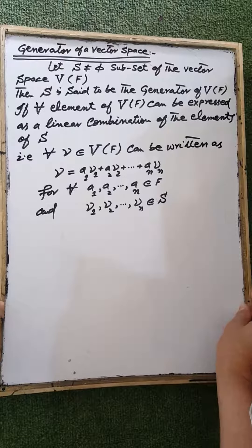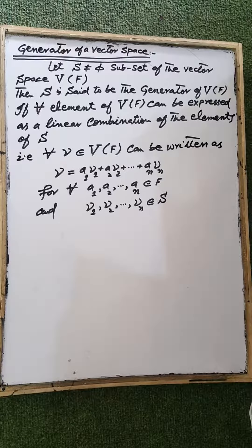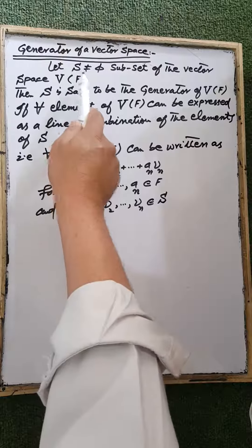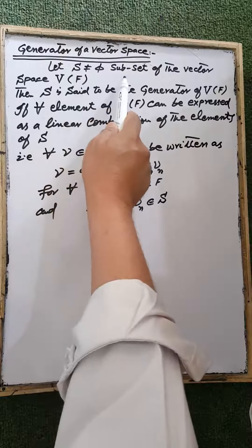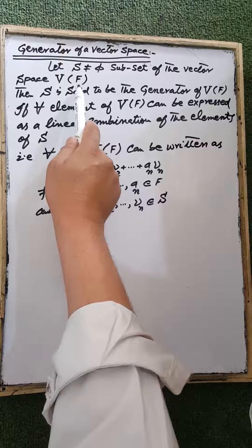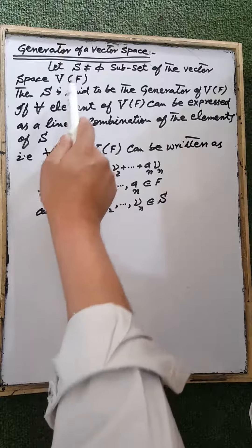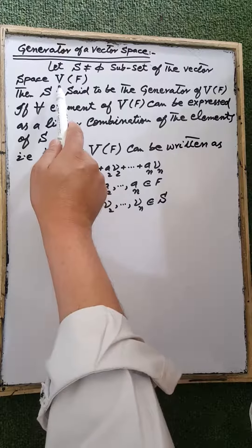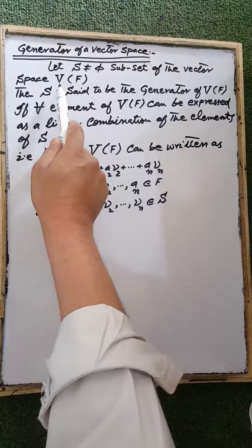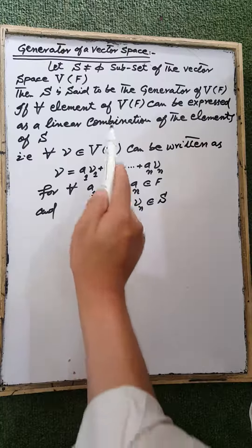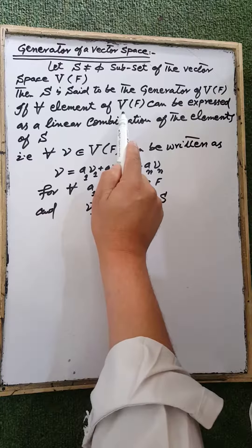Now our next topic is the generator of a vector space. Suppose that S be a non-empty subset of the vector space V over the field F. The set S is said to be the generator of the vector space V over the field F if each element of the vector space V can be expressed as a linear combination of the elements of the set S.